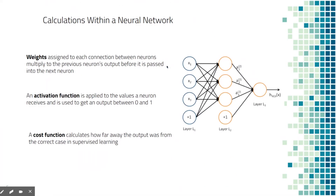Neurons perform calculations, and these are what enable neural networks to function and learn. The first important piece to know is the use of weighted values and the subsequent weights assigned. Weights are applied to each connection between neurons and are multiplied to the output of the previous neuron before that product is passed into the next neuron. This allows every neuron to connect to another, as weights nearing 0 help prevent incorrect associations, and are a large part of learning, as these weights are changed to minimize error.